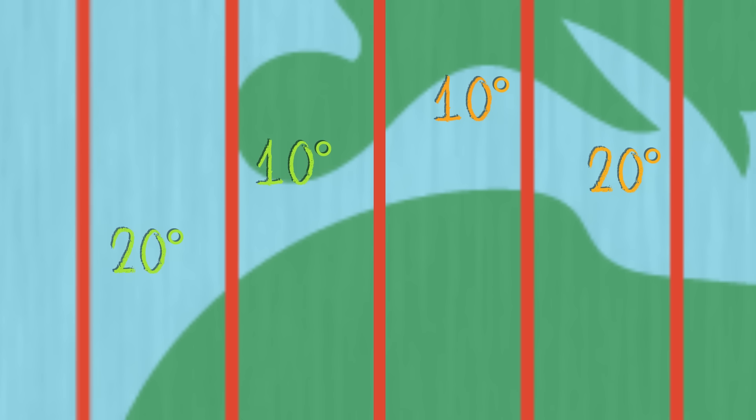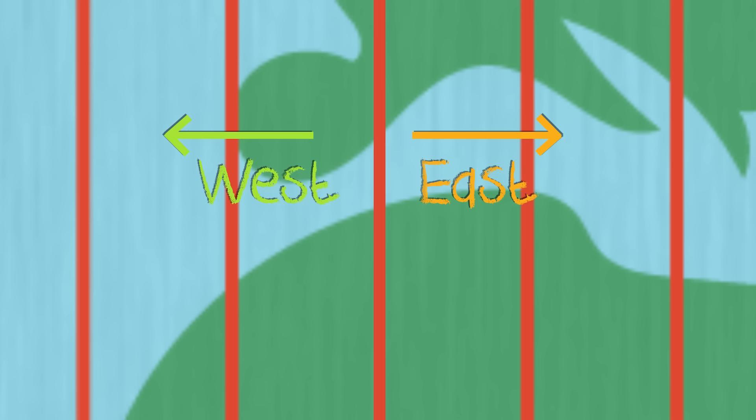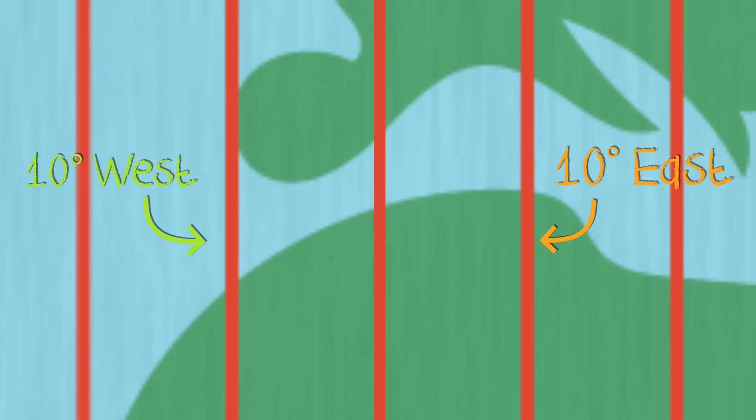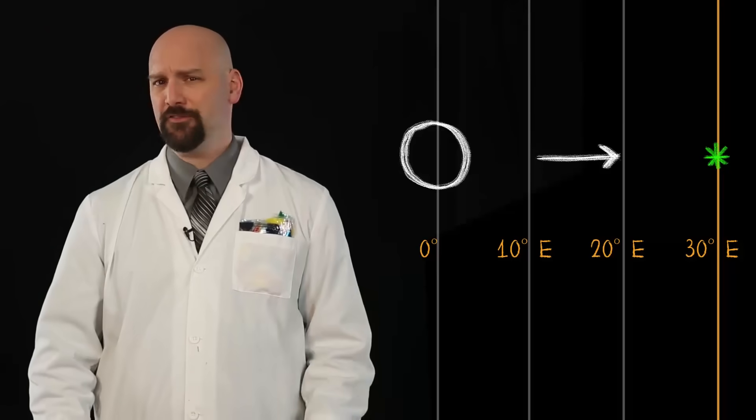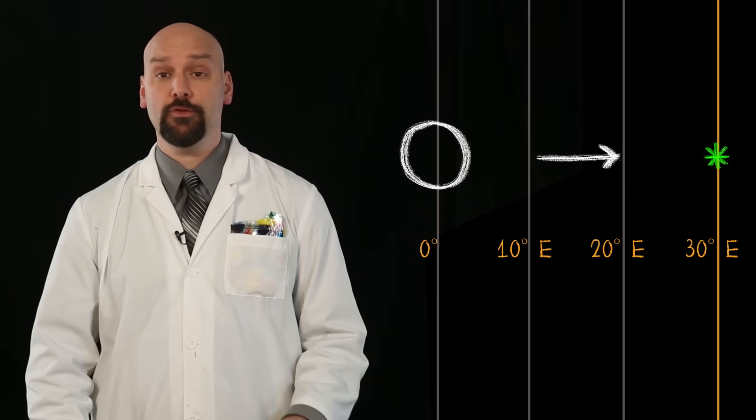And the way we label these is which side of zero is east and west. You'll notice that this point is ten degrees east and this one is ten degrees west. So here is our point at thirty degrees east. But is that enough to land our plane? What do you think?